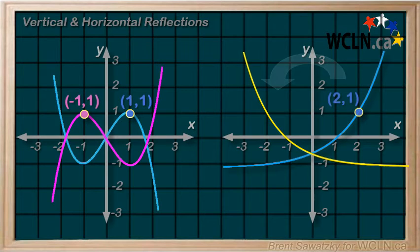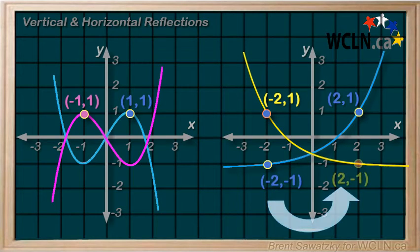If an x value is a positive, it becomes a negative. And again, if negative, it becomes a positive. And that's a horizontal reflection.